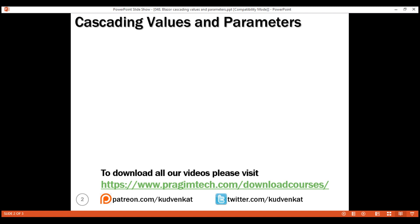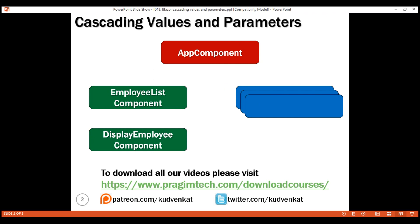A Blazor application is a set of components. We create individual components and put them together to create a working Blazor application. Components can also be nested — a component can be nested in another component, and that component can be nested in yet another component, and this can go on.